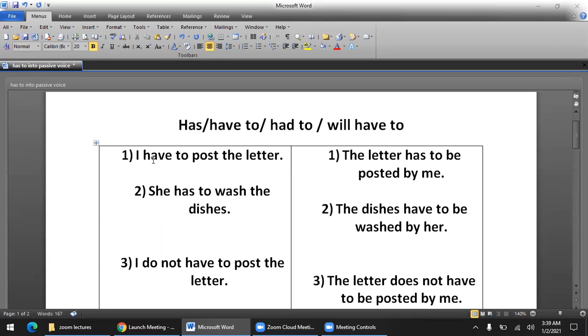Now let's change this example to passive voice. Look at this sentence: 'I have to post the letter.' What is the subject and object here? The subject is 'I' and the object is 'the letter.' When we change it to passive, 'the letter' becomes the subject. Since 'the letter' is a singular noun, we use has to: 'The letter has to be posted by me.' Notice how the subject and object change, pronouns change, and we add the past participle.